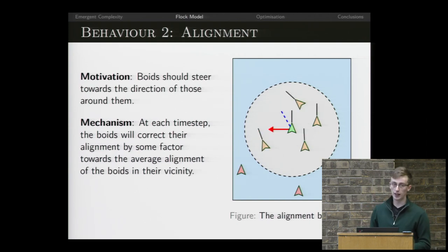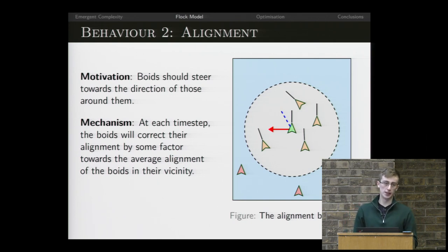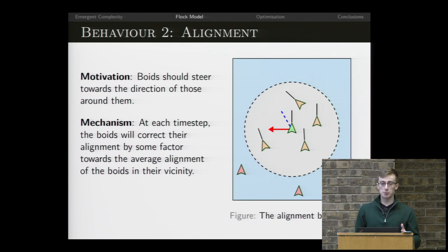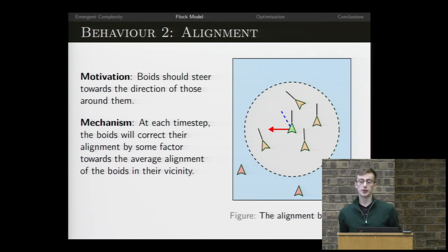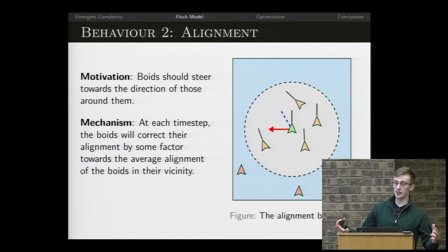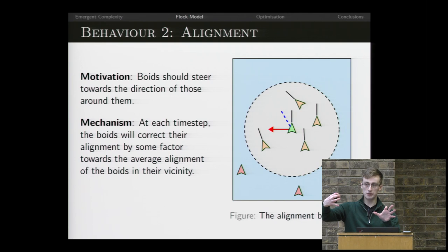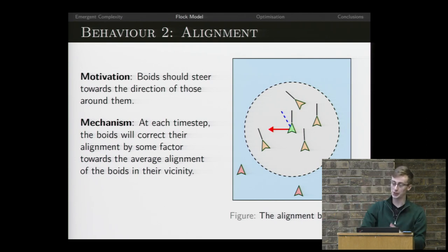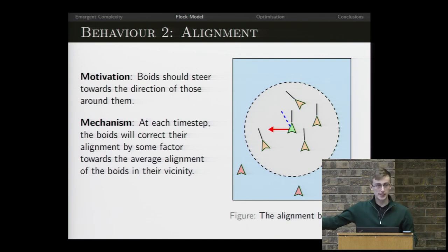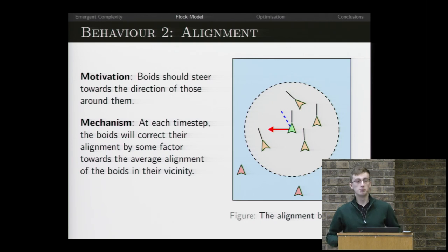The next behavior is alignment. If we zoom in to an individual bird's perspective within a flock, you can see that birds tend to agree about the direction the flock is moving at a local level. It's only when you zoom out that you see complex behavior where birds are all moving in subtly different directions. We model this as: a bird cares about moving in the average direction of the birds in its vicinity.